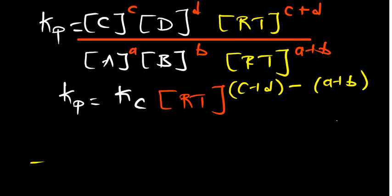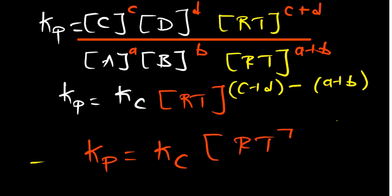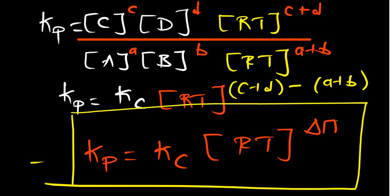Therefore, our Kp is equal to Kc times RT raised to the power delta N — where delta N represents the stoichiometric coefficients of the products minus those of the reactants. That is the proof for this equation. Thank you very much for watching.